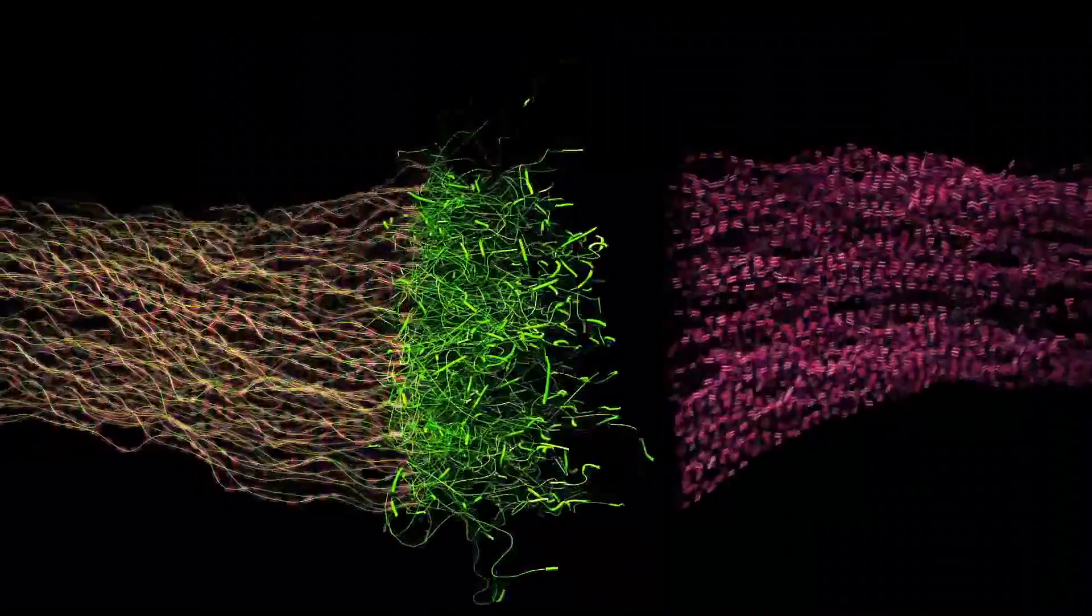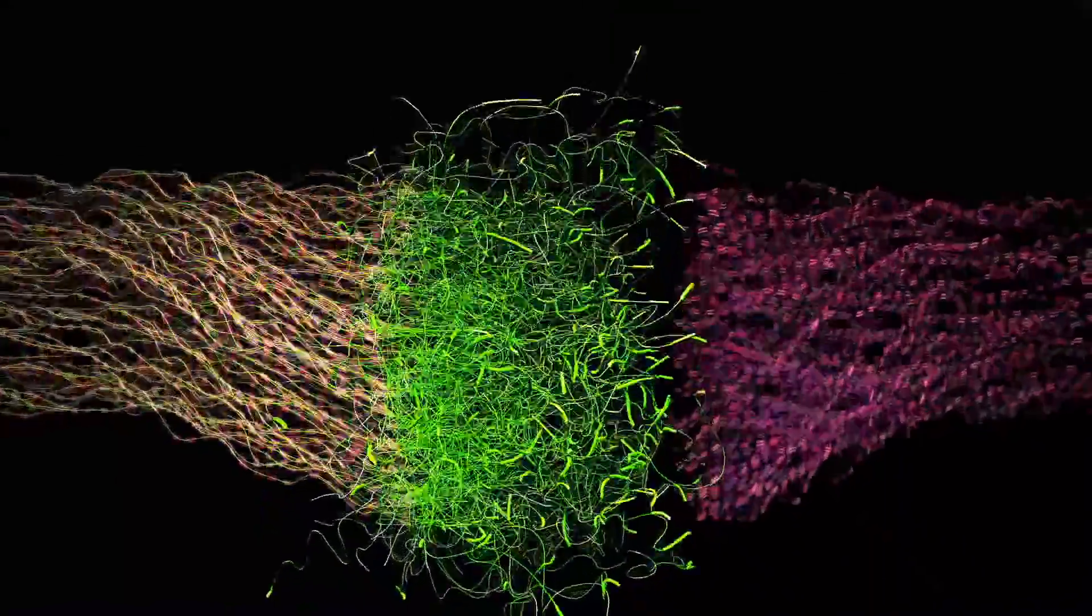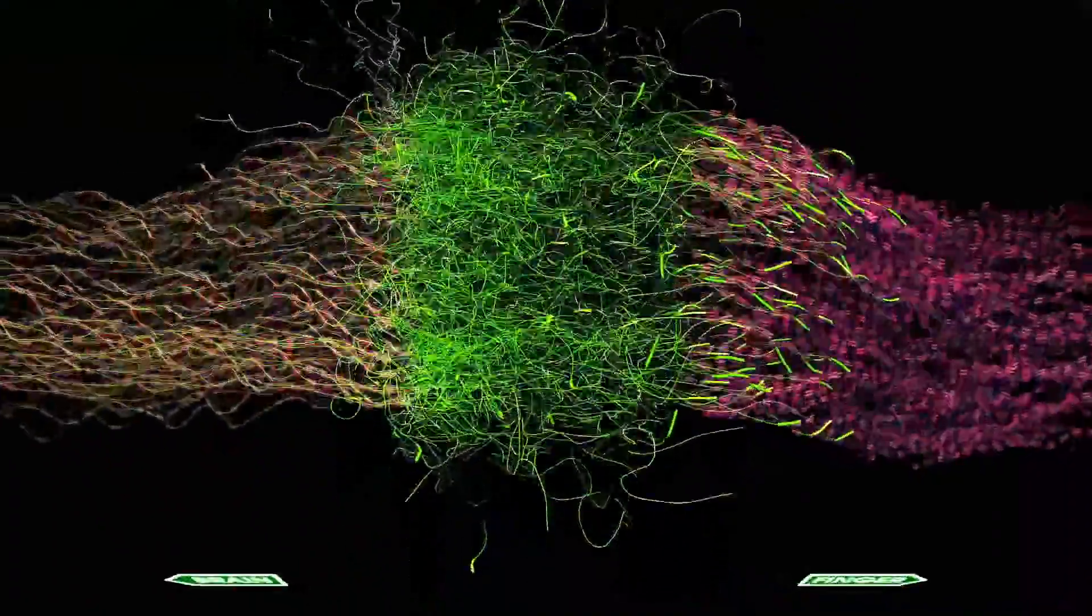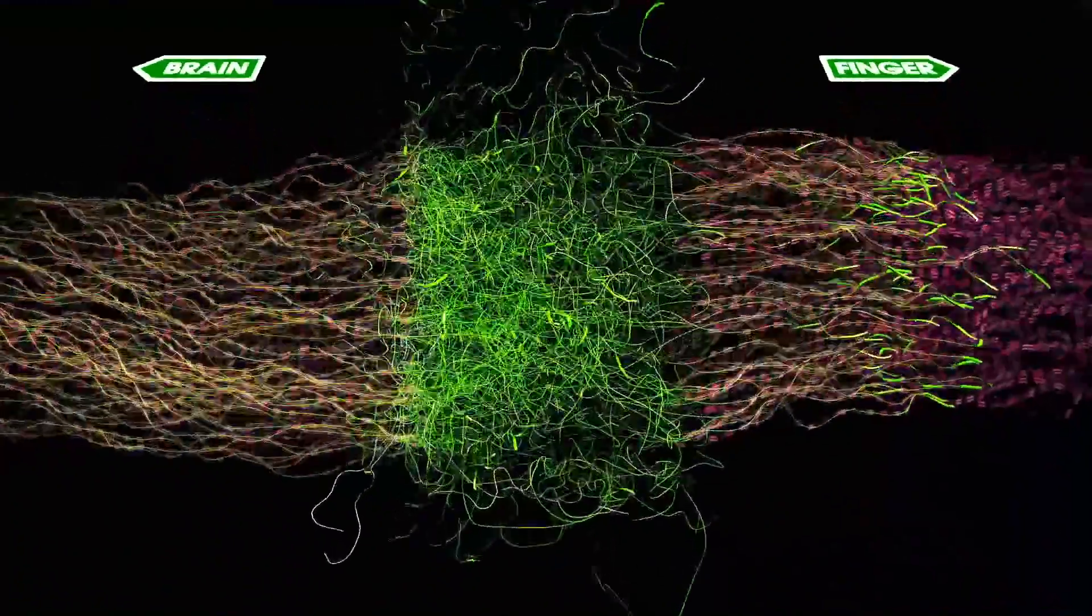Some of these sprouts find their way across the injury site into special channels in the remaining stump, formed by Schwann cells and the connective tissue. These provide both physical and chemical guidance for regenerating axons.